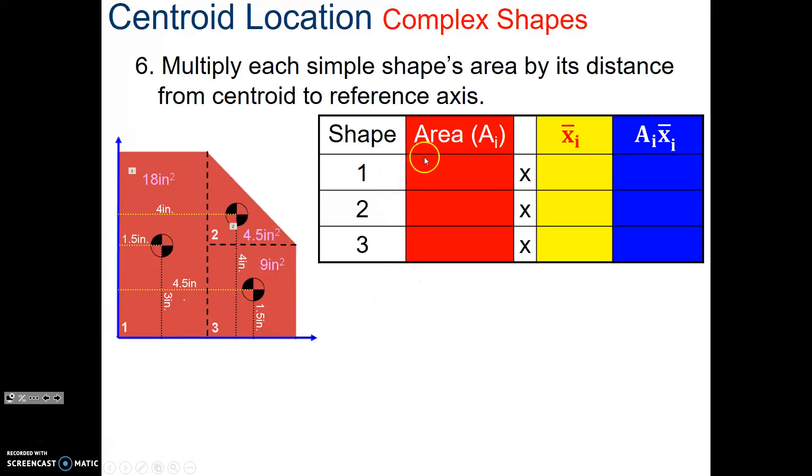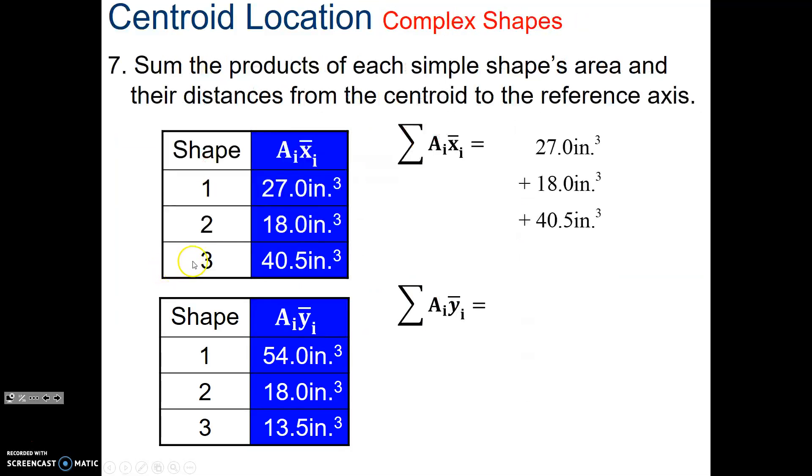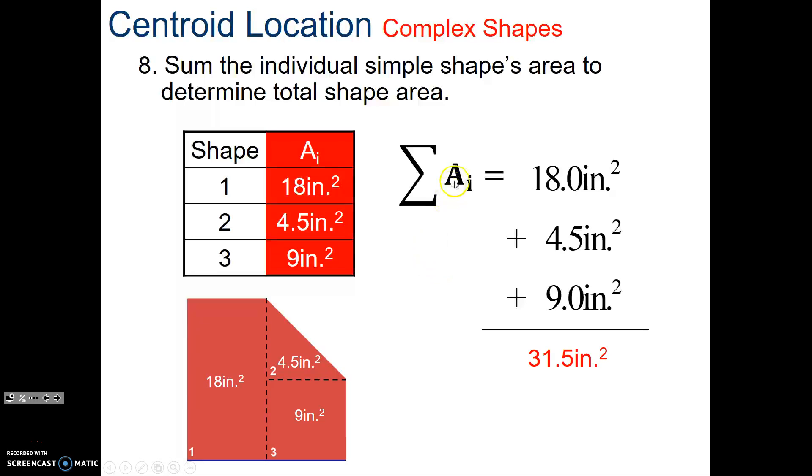And then we do that with all our shapes. And then we just plot in our stuff. Area, 18. Its location in the x is 1.5. And then you take the a times its x, so this times that. Do that for shape 2. Its area, its x location, which is 4. Multiply 4 times 4.5, that gives you the 18. And 9 squared, the area of this, times its location in the x-axis gives me 40.5. We do this again with the y's, doing the exact same thing. Now, we add them all up. That's what that sum is. Sum of the product of the area times that, we get 85.5. Sum of the y's, 85.5. Now, we're just going to take the sum of all the areas, add them all up, so it's the area of the whole shape, 31.5.